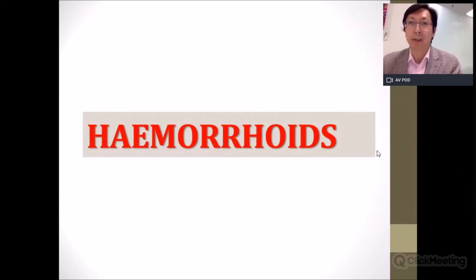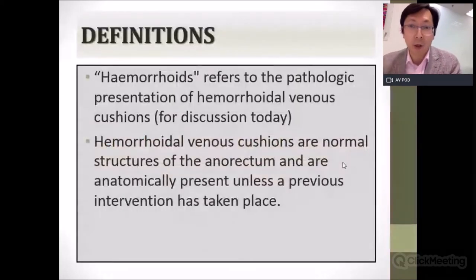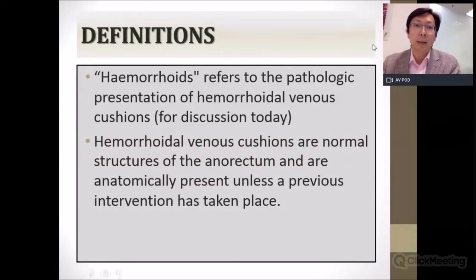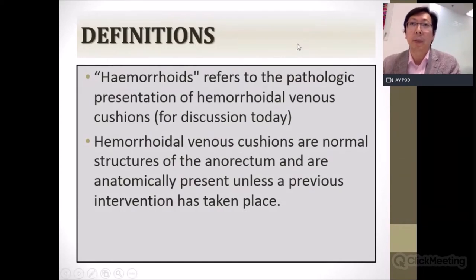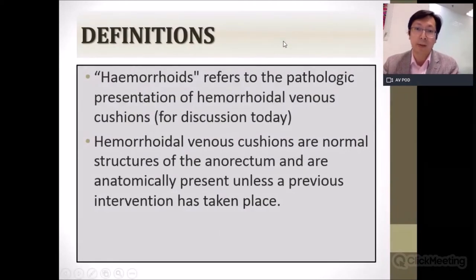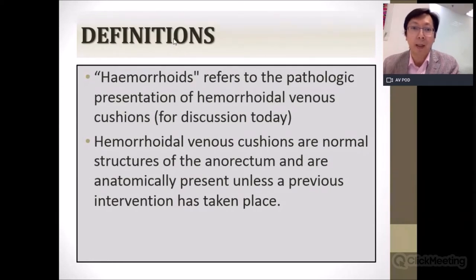The second part of the talk is about hemorrhoids. Hemorrhoids refers to the pathologic presentation of hemorrhoidal venous cushions. The hemorrhoidal venous cushions are actually normal structures in the anorectum, anatomically present unless previous intervention has taken place.